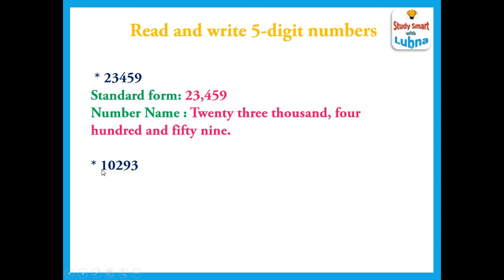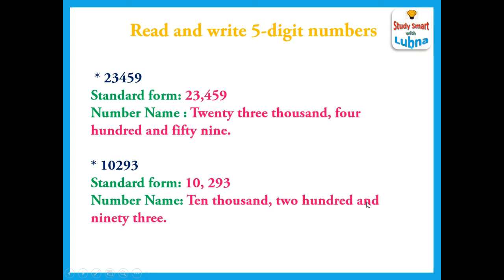Here is another example. A 5-digit number is given. First we write the standard form by putting a comma after the ones period, then discuss the number name. The place values are: 3 ones, 9 tens, 2 hundreds, 0 thousands and 1 ten thousand. The number name is ten thousand, two hundred and ninety-three. In this way we can find the standard form and write the number in words by putting commas in the proper way.